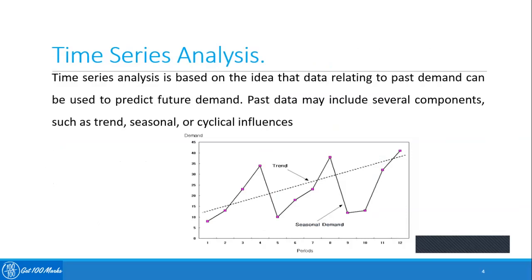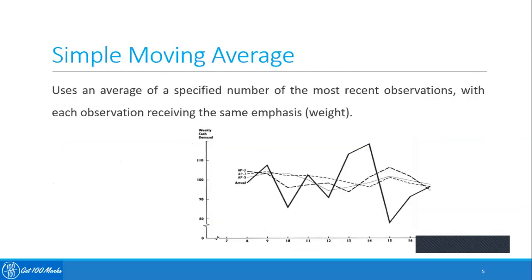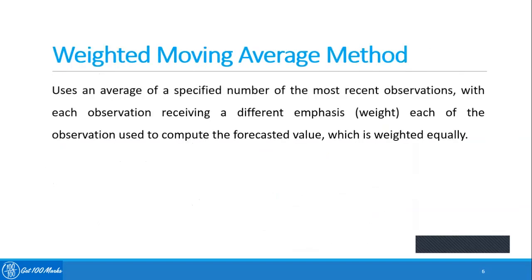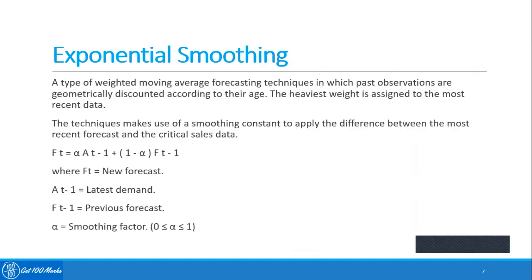Simple moving average method uses an average of a specified number of the most recent observations, with each observation receiving the same emphasis or weight. Weighted moving average method uses an average of a specific number of the most recent observations, with each observation receiving a different emphasis or weight.